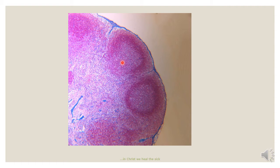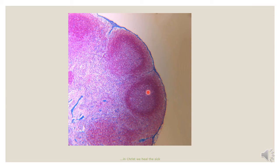The follicles are actually aggregates of B cells. These B cells can be in the resting state, as seen in the primary follicle, or in the active state, as seen in the secondary follicle. The secondary follicle contains a pale center called the germinal center, that is surrounded by a darker zone called the mantle zone.